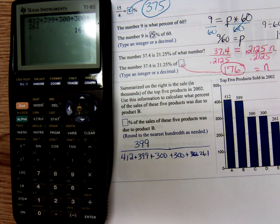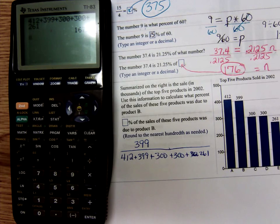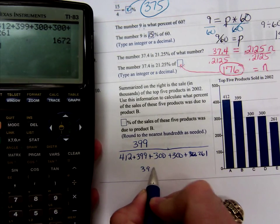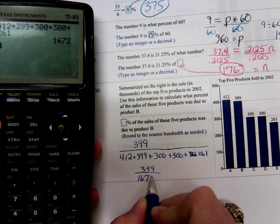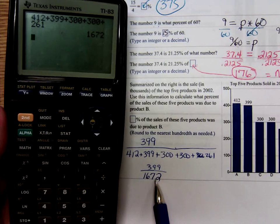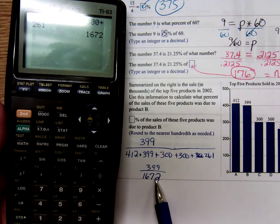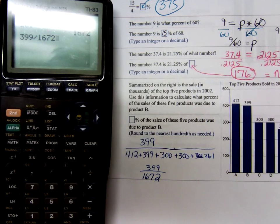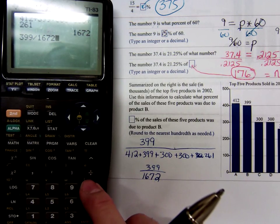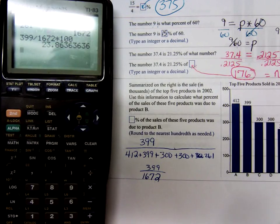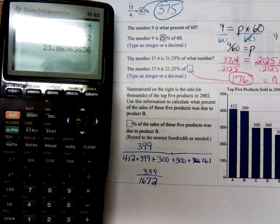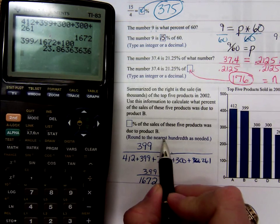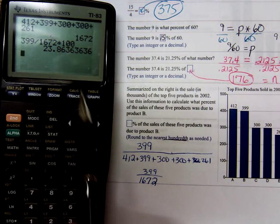So product B accounted for 399 out of 1,672 products. Well here we have a fraction, we know how to convert that to percent. So you're just going to go 399 divided by 1,672 and then to move the decimal point two places, times 100. And this one we're told to round. Notice it's a long decimal number and we're told round to the nearest hundredths.